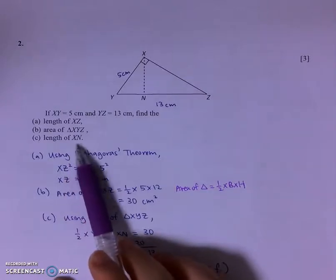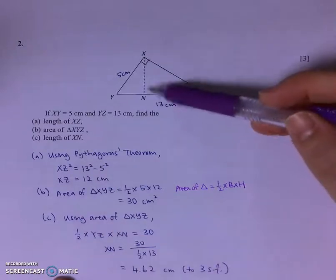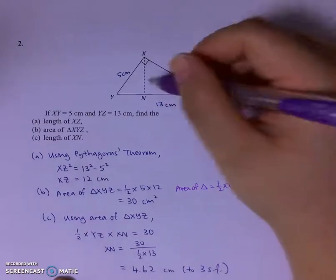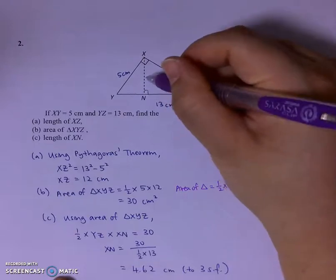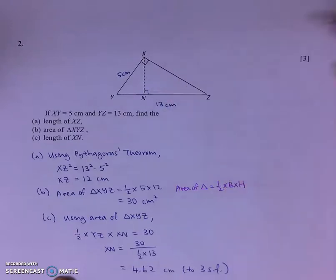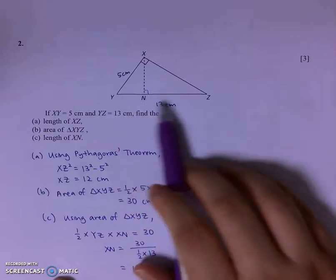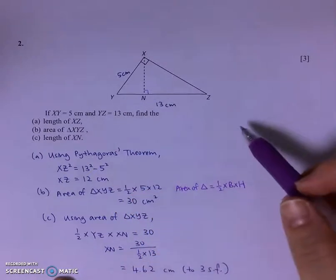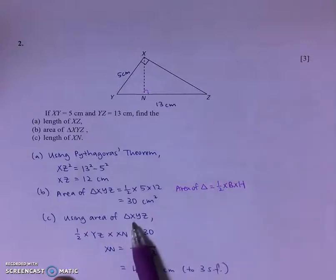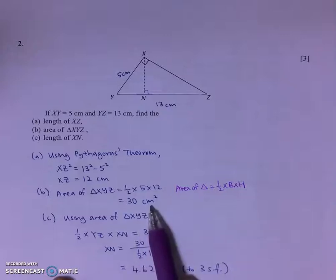And for part C, they want us to find the length of XN. XN forms a right-angled triangle with XZ. So I will use the area of the triangle for part B.